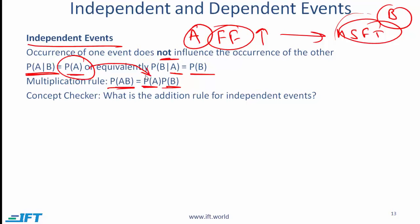I'll connect back to a problem you likely saw in high school: if you flip two coins, what is the probability that you get heads on both coins? Flipping two coins represents two independent events. The probability of getting heads on the first coin is one-half, and the probability of getting heads on the second coin is one-half. So the probability of getting heads and heads is simply one-half times one-half, which is one-fourth. That is an example of using the multiplication rule with independent events.